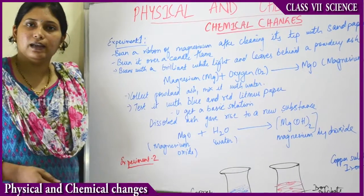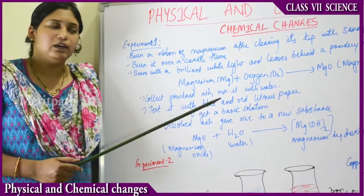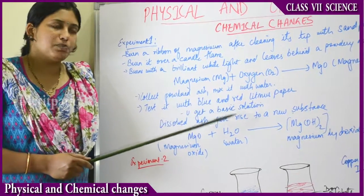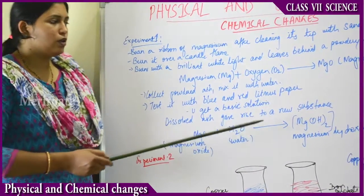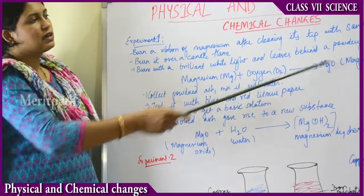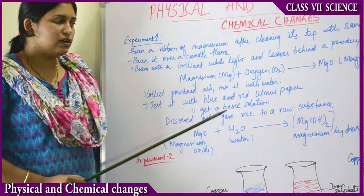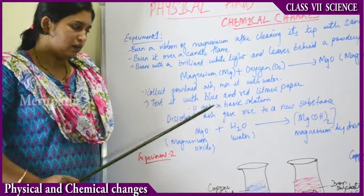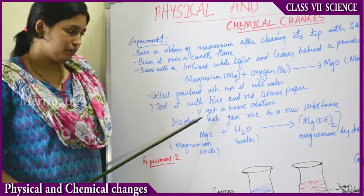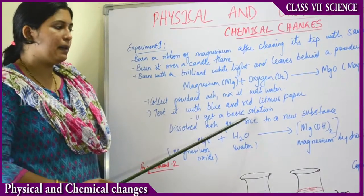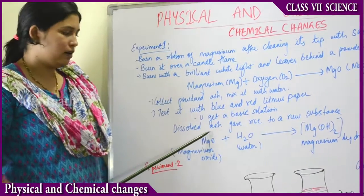Collect the MgO, magnesium oxide, mix it with water, and test with blue and red litmus paper. Litmus paper is an indicator — it indicates whether the substance is acidic or basic. Here it indicates that magnesium oxide is a base.